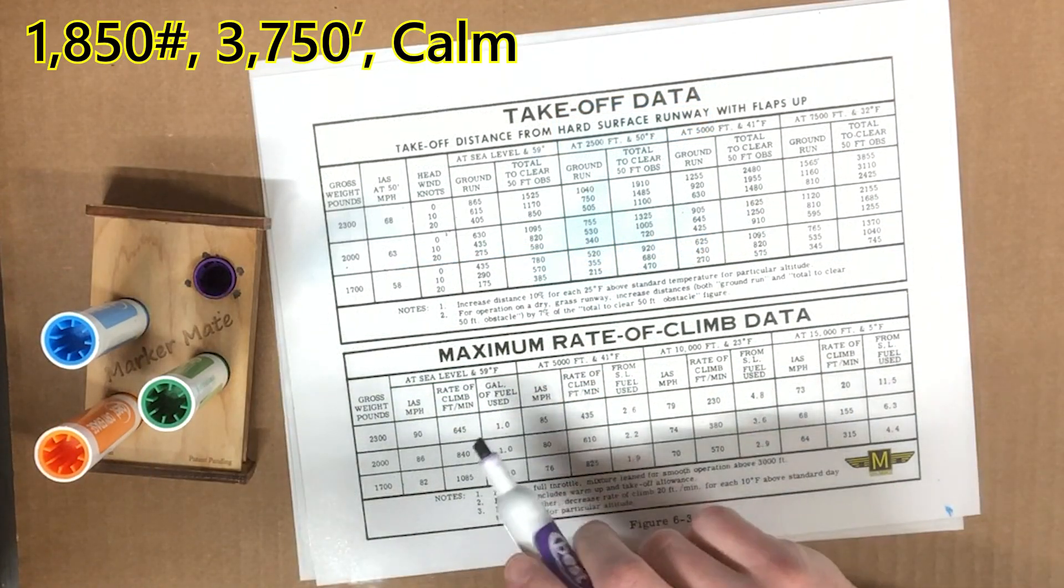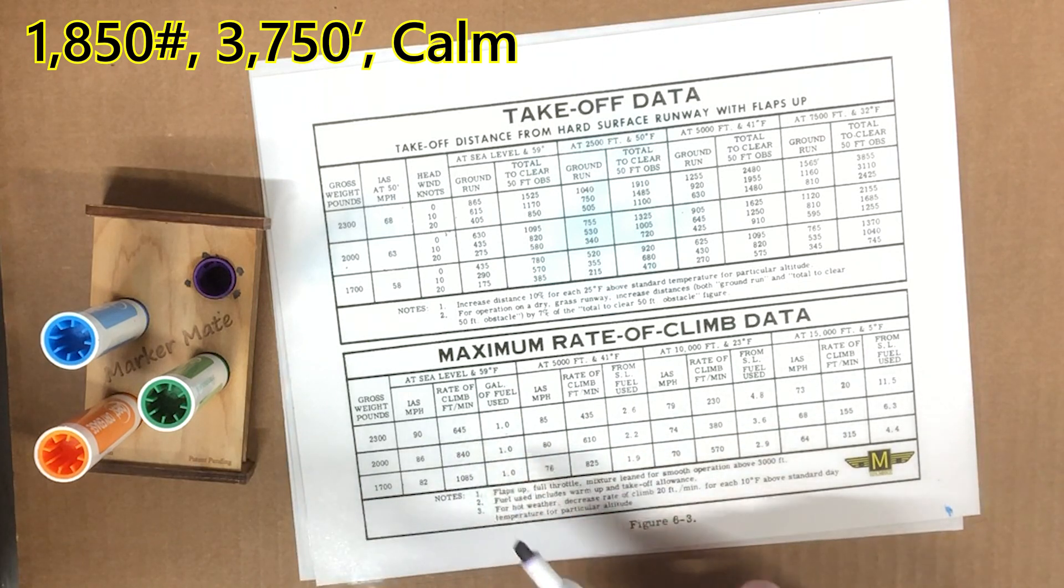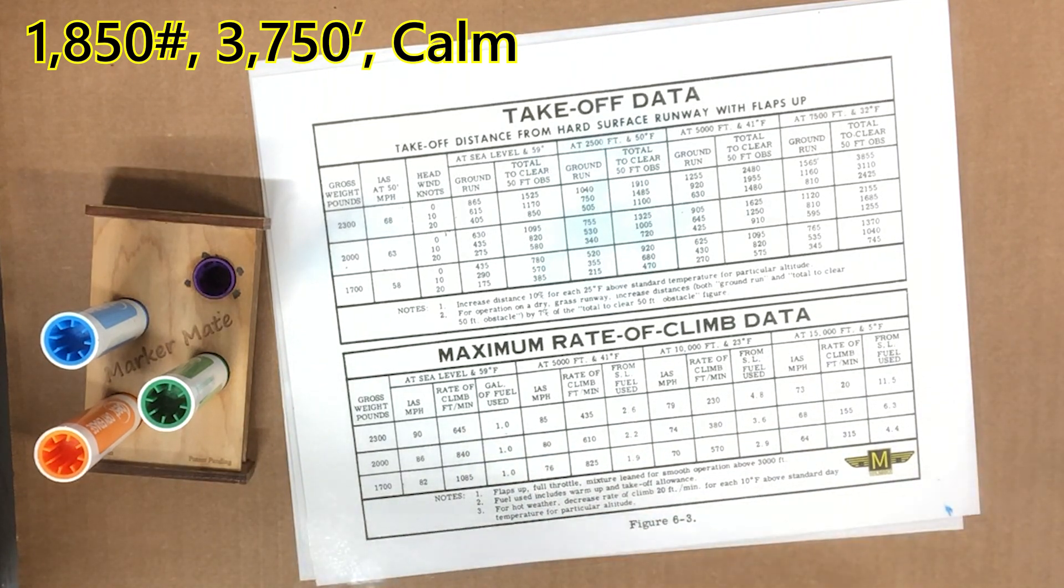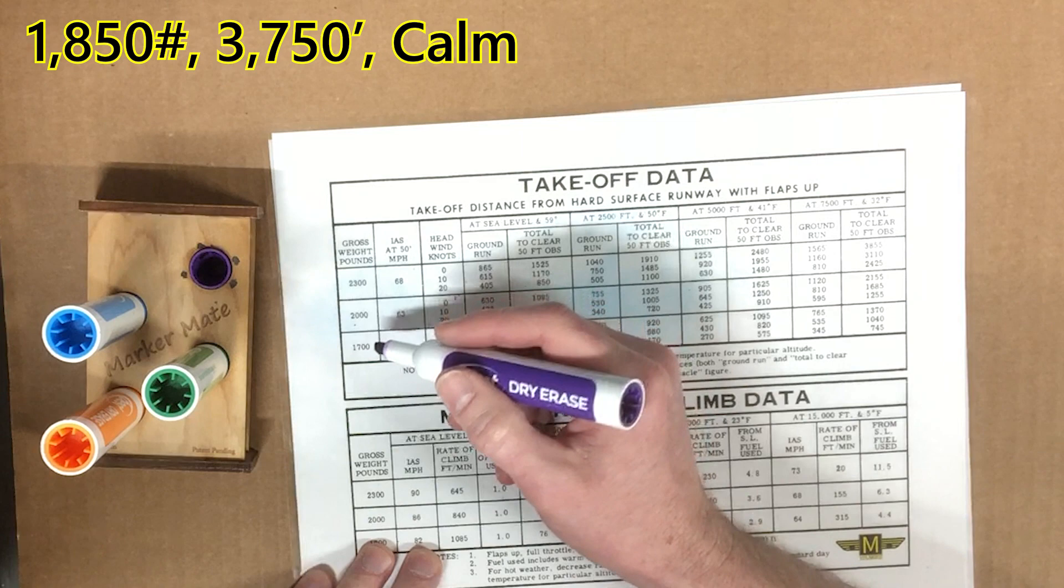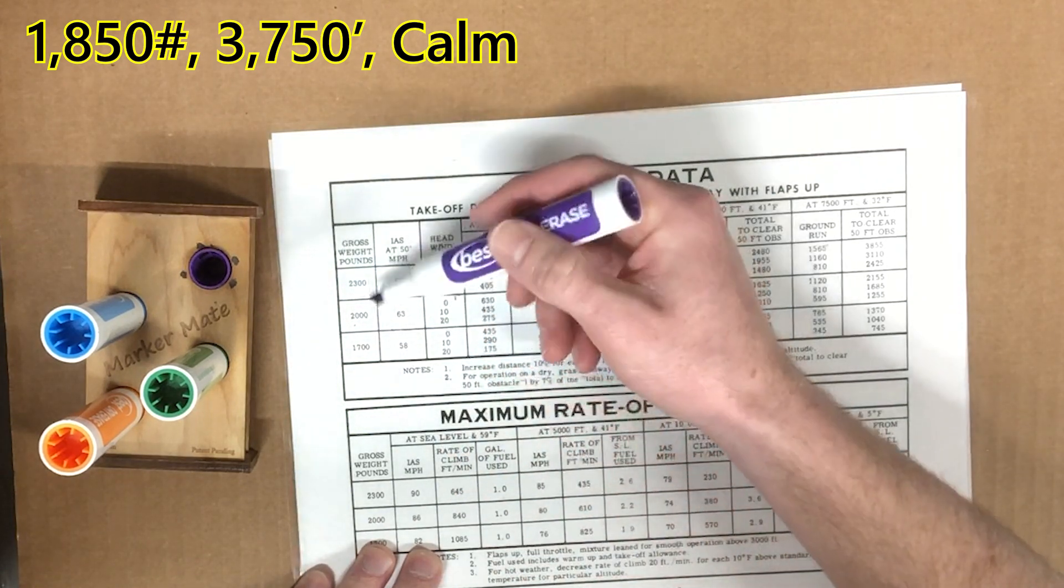So example two, here we're at 1,850 pounds. There's no wind. Our field elevation is 3,750. And so what's our ground run and takeoff over a 50-foot obstacle? Well, so for this example, 1,850 doesn't exist, right? We have to interpolate.